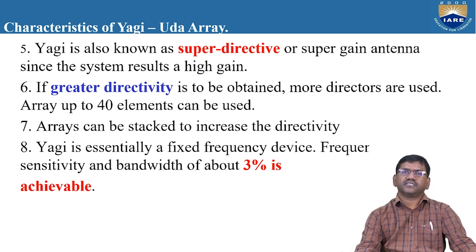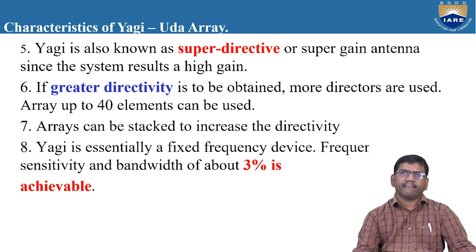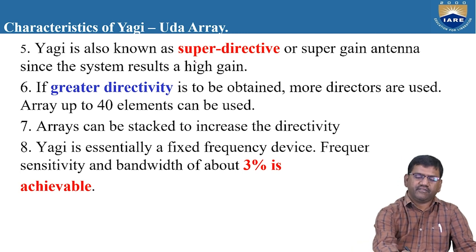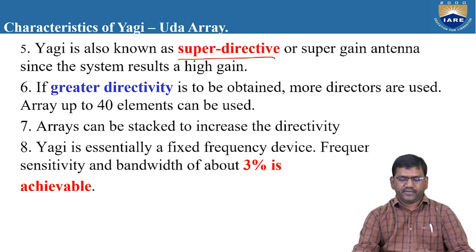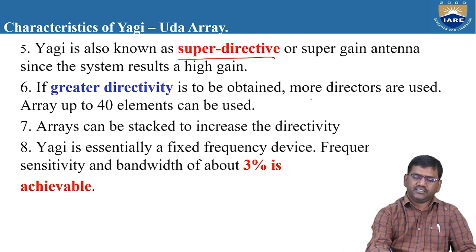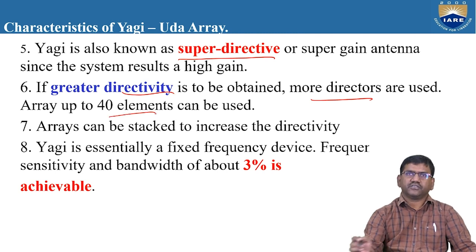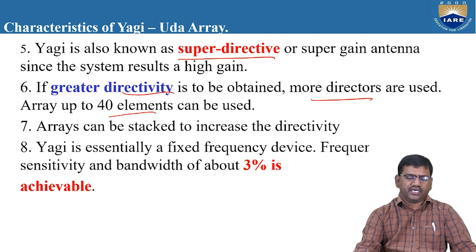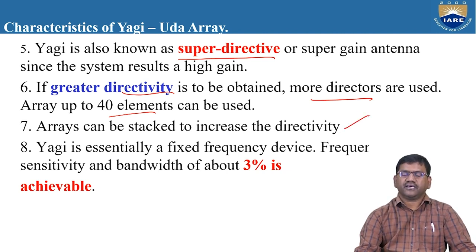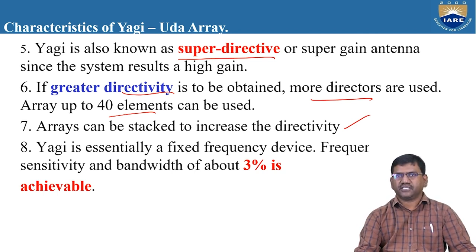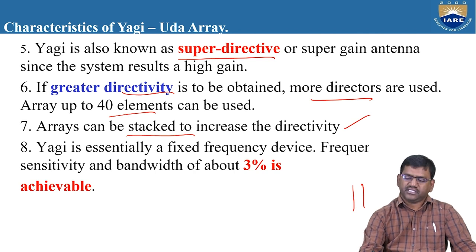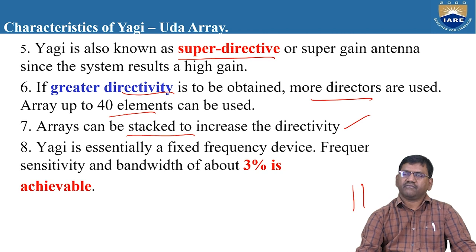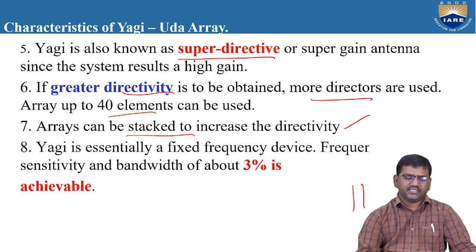Yagi is also known as a super-directive or super-gain antenna because the directivity is unidirectional and can be increased by increasing the number of elements. Up to 40 elements can be used. Arrays can also be stacked to increase directivity by placing elements adjacent to or one over the other. Yagi is essentially a fixed-frequency device; frequency sensitivity and bandwidth of about 3% is achievable. The bandwidth can also be changed at least 2% by varying the spacing between elements from 0.1 lambda to 0.15 lambda.